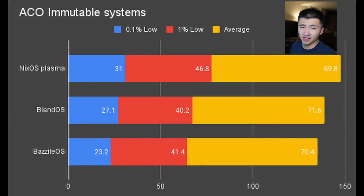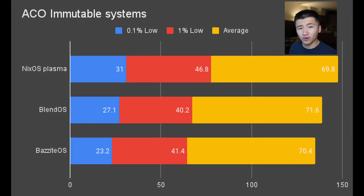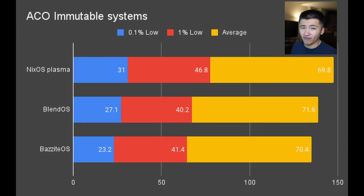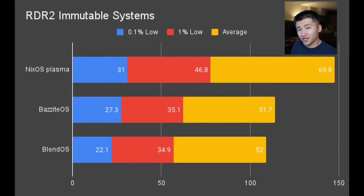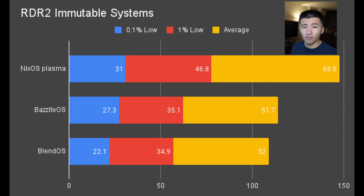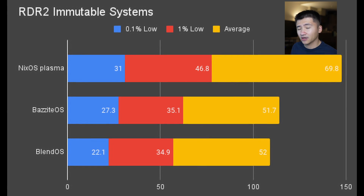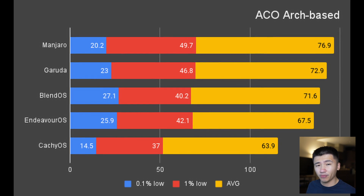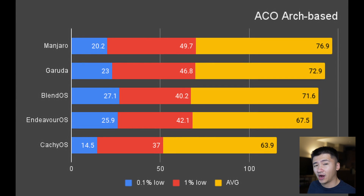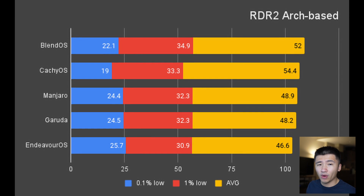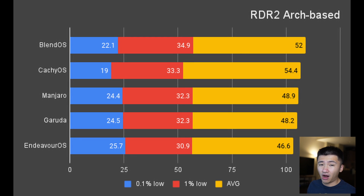Let's compare these numbers with other immutable systems. The NixOS numbers are not as accurate because I had to let the laptop cool down for each desktop environment comparison, so the NixOS numbers are way better than the other two distributions. We can see BlendOS is actually on par with VanillaOS depending on the game. After copying the numbers to compare with other Arch-based Linux, BlendOS is performing averagely in Assassin's Creed Origins, but ranked number one in RDR2 with the best 1% low number, and 0.1% and average numbers are also pretty good.